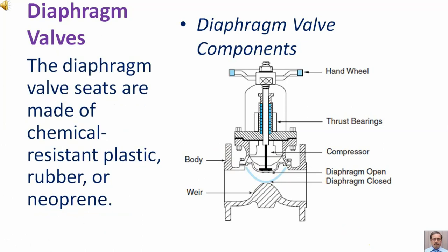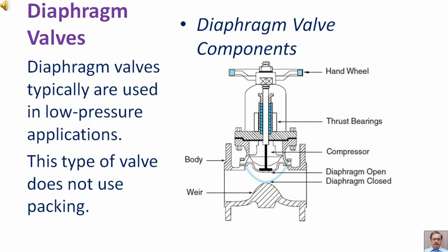Diaphragm valve seats are made of chemical-resistant plastic, rubber, or neoprene. Diaphragm valves are typically used in low-pressure applications. This type of valve does not use packing.